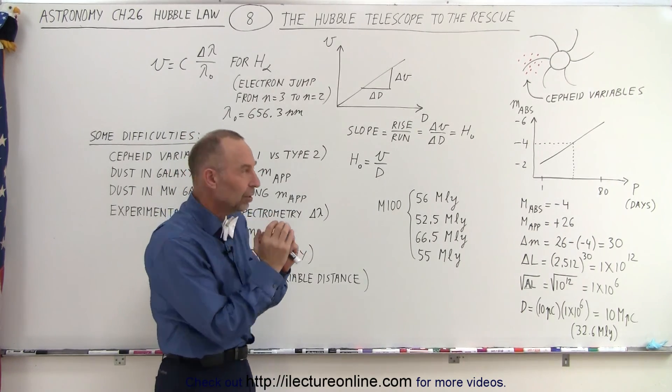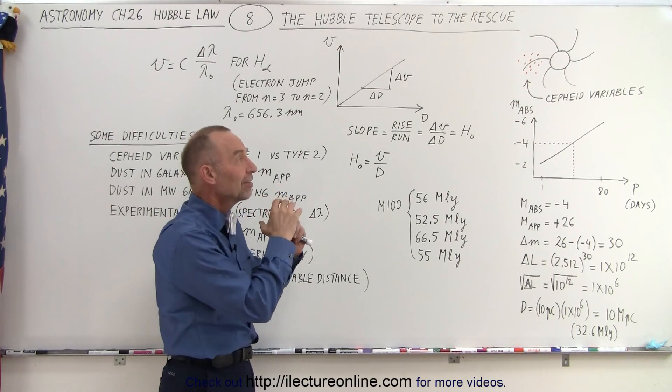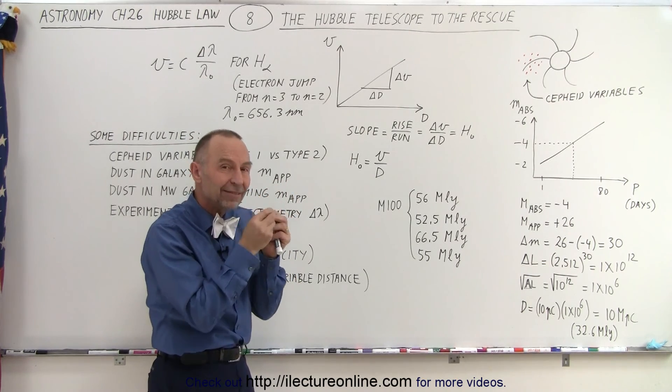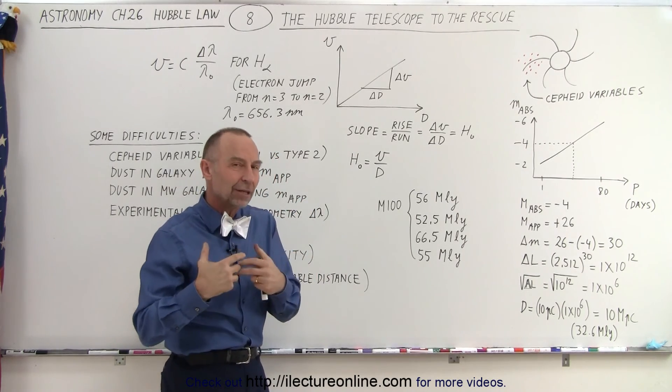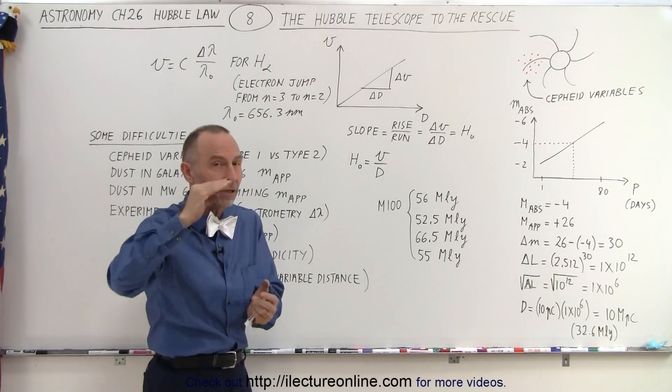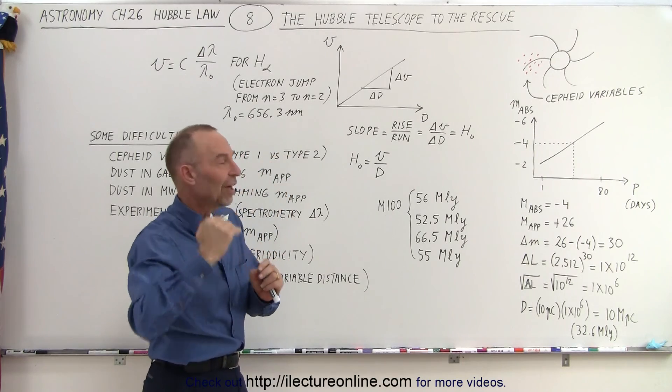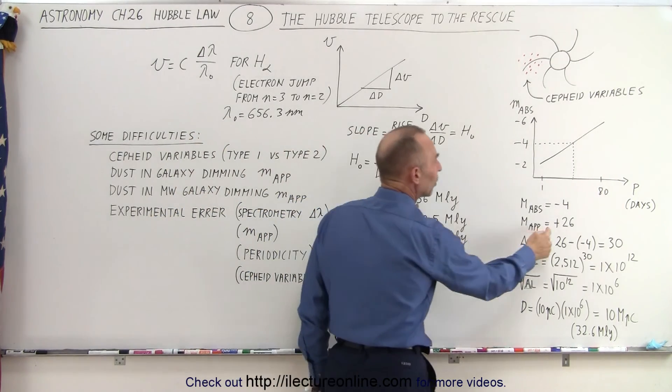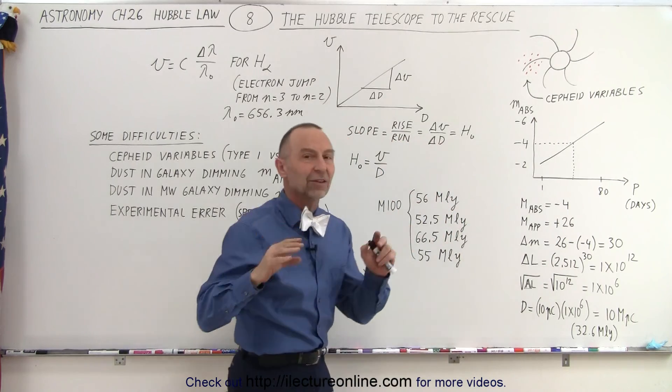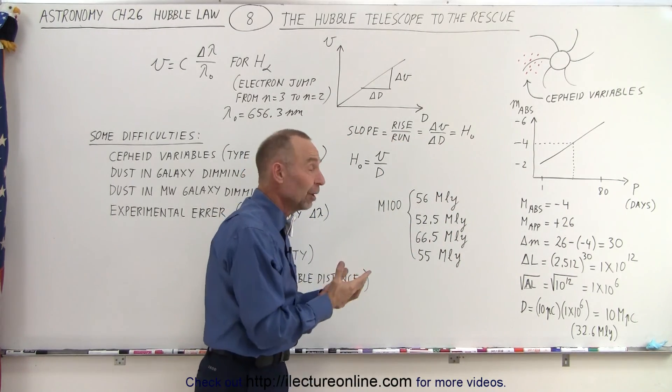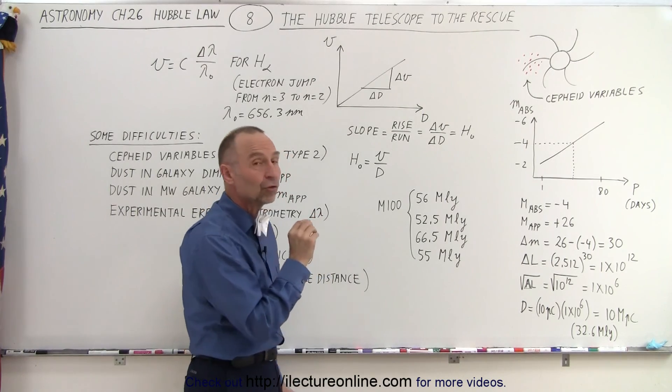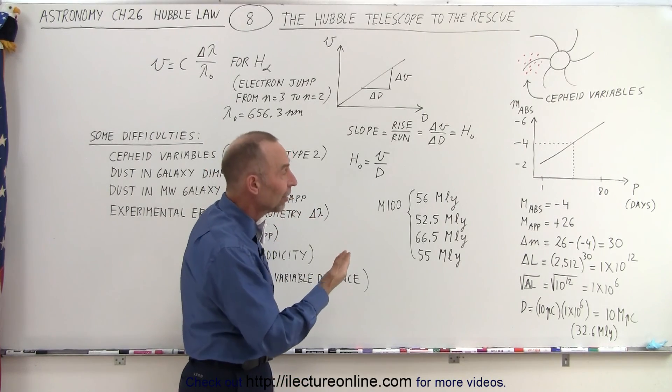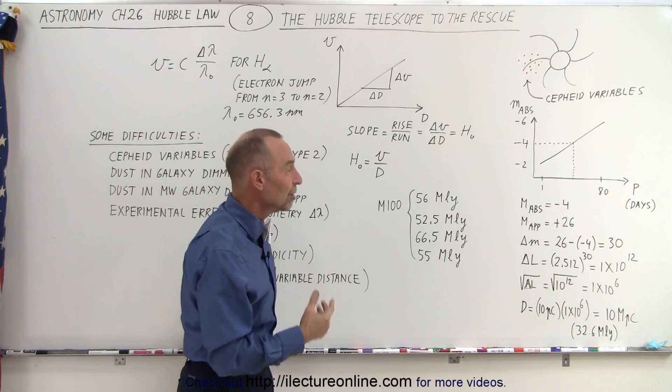Then one by one you take a picture of the Cepheid variables over time and you estimate the apparent magnitude—how bright did they appear. Of course they're changing the magnitude so you want to try to get the average value of that. Notice that these are very small values—they're large numbers, positive numbers, but that means they're very, very dim. So very carefully you try to figure out the apparent magnitude.